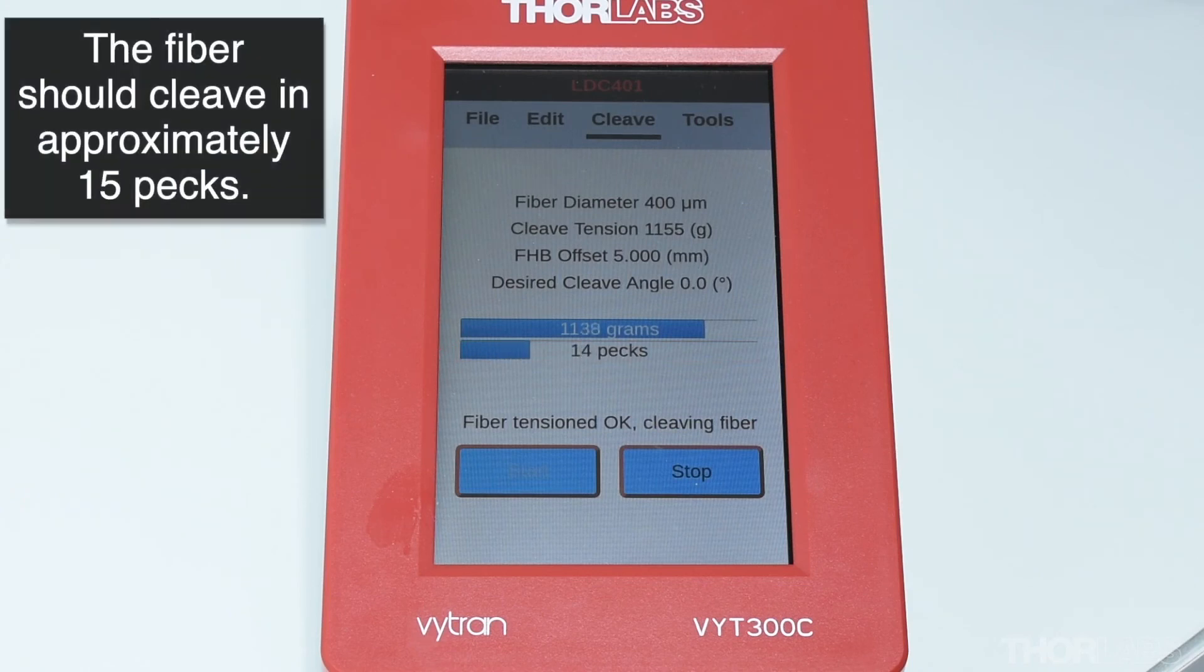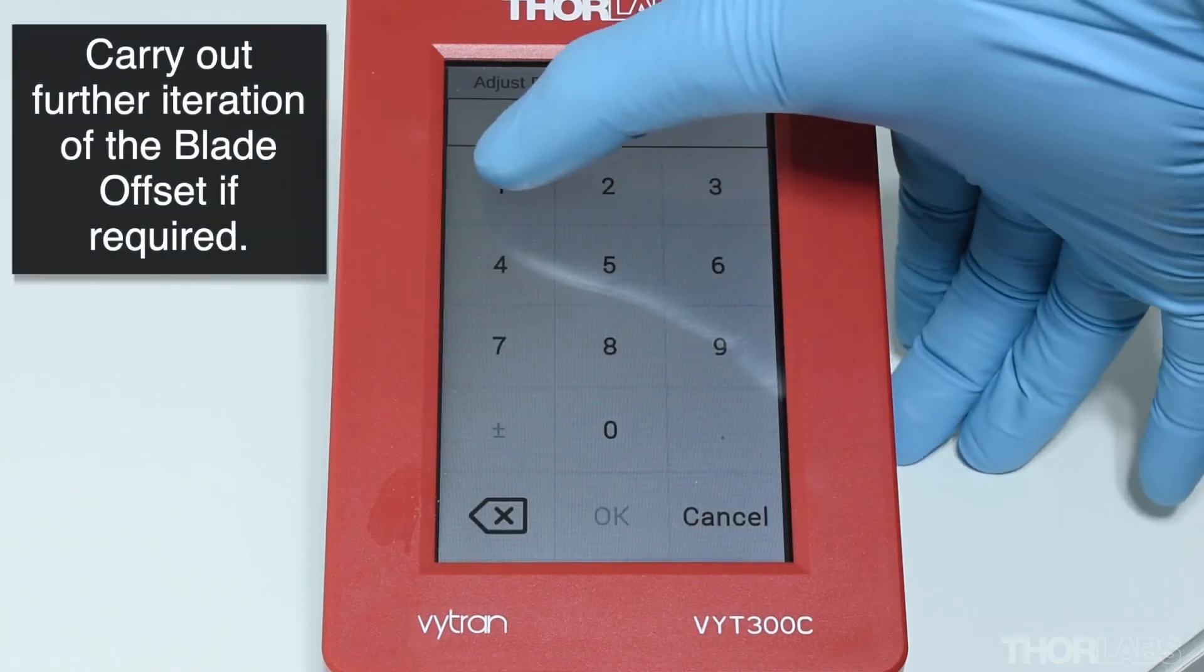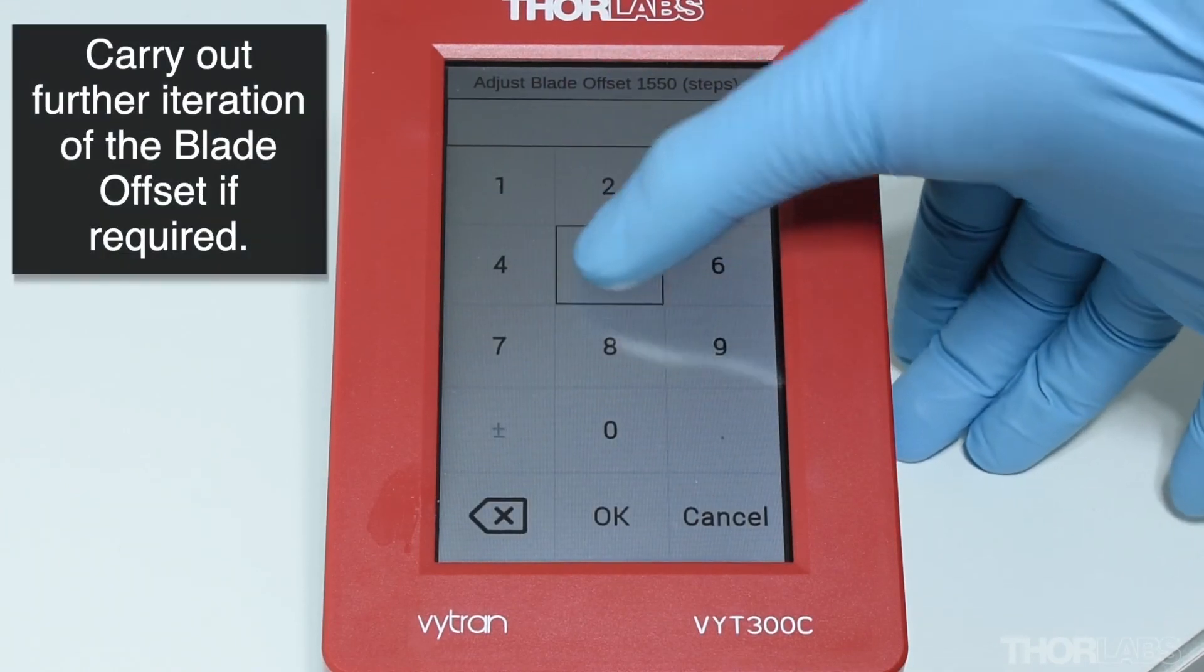As a rough guide, about 15 pecs should occur before the fiber is cleaved. Further iteration of the blade offset value can be carried out if required.